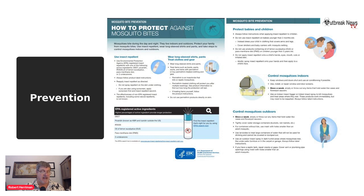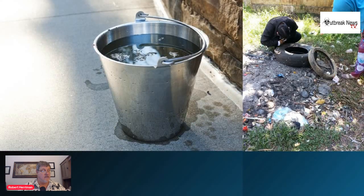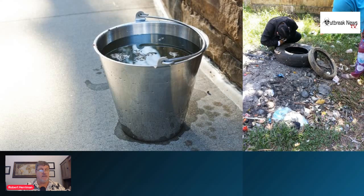Keep mosquitoes outside your home by repairing holes in screens and keeping windows and doors closed if possible. Use mosquito netting at night in areas where dengue is common. If you're pregnant, avoid traveling to areas where dengue is common if possible. EPA-registered insect repellents are proven safe and effective even for pregnant and breastfeeding women. Use screens on windows and doors, use air conditioning if available, and once a week empty, scrub, turn over, cover, or throw out items that hold water — like buckets and tires — checking both indoors and outdoors.